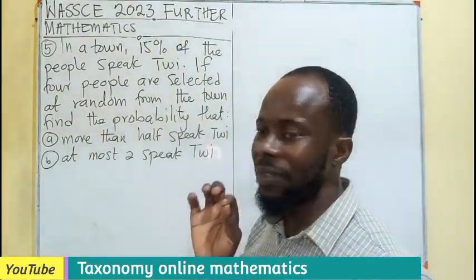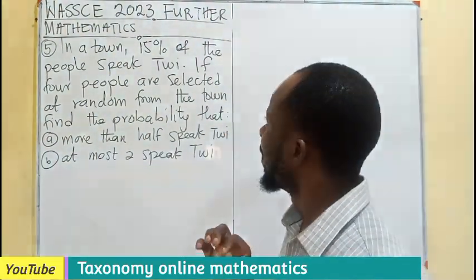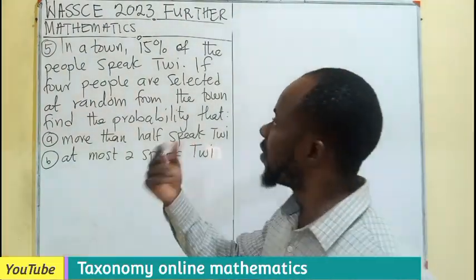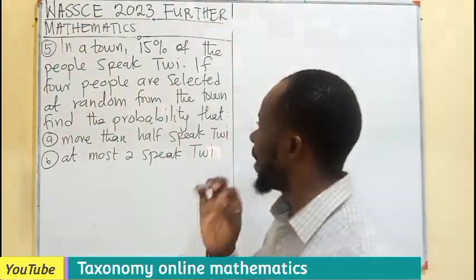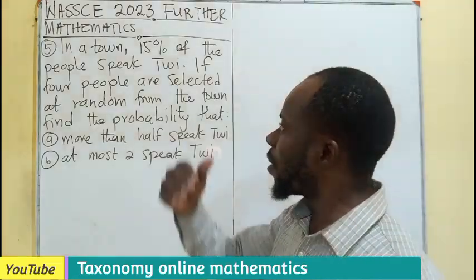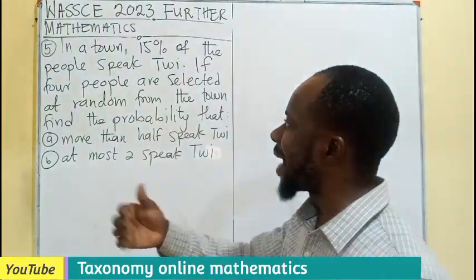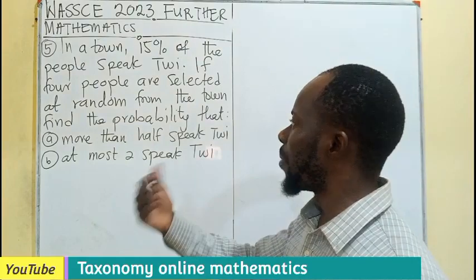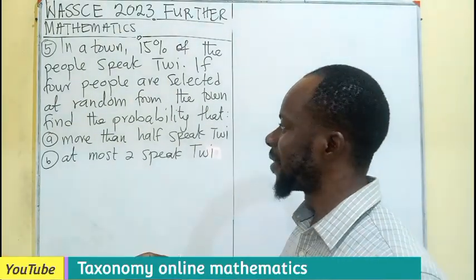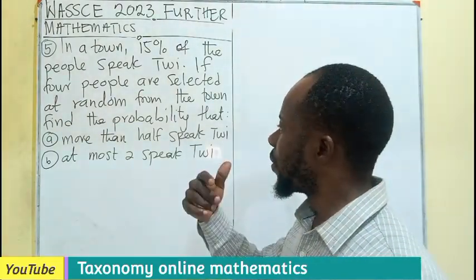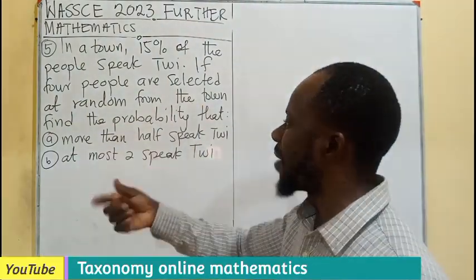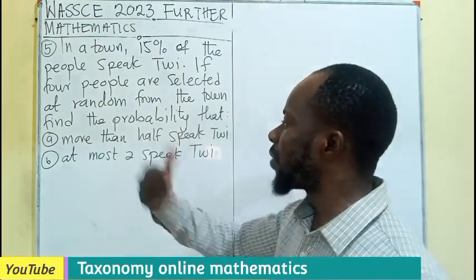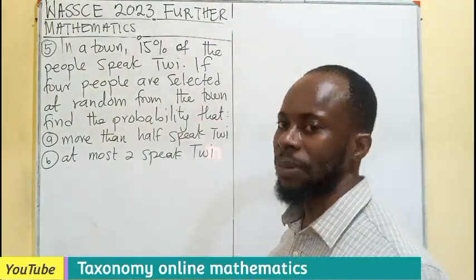In a town, 15% of the people speak three languages. If 4 people are selected at random from the town, find the probability that: A — more than half speak three, and B — at most two speak three.